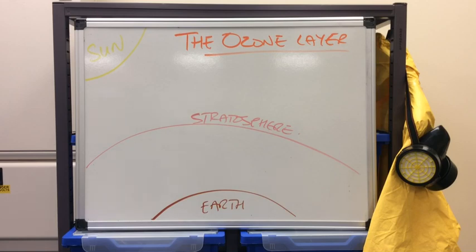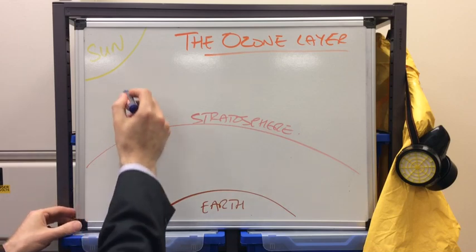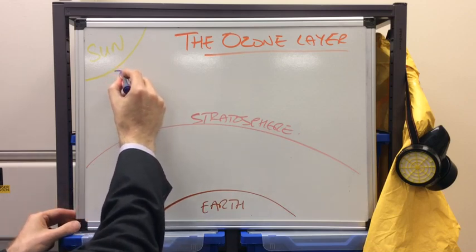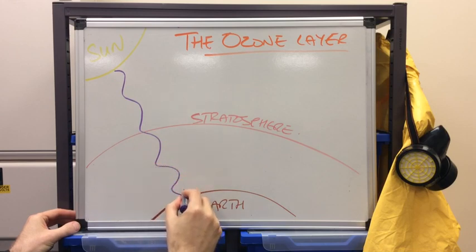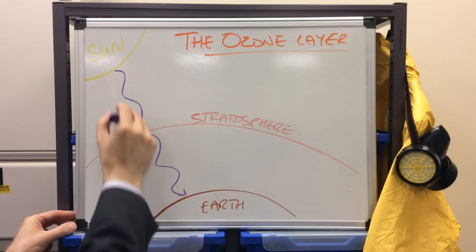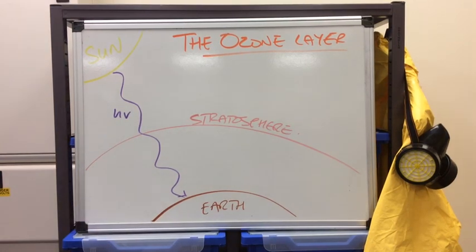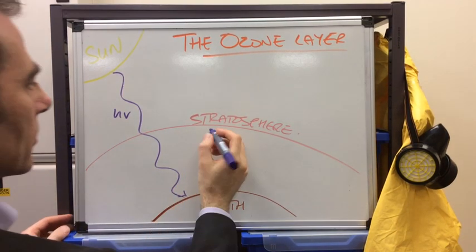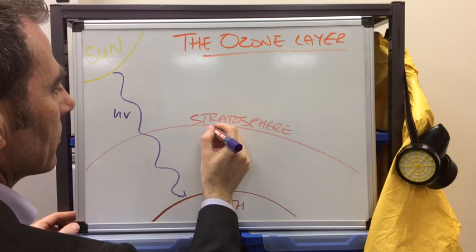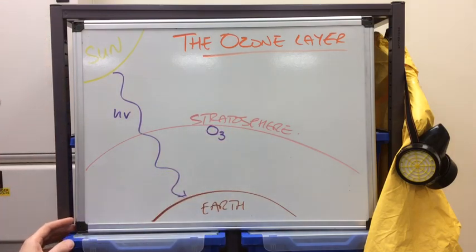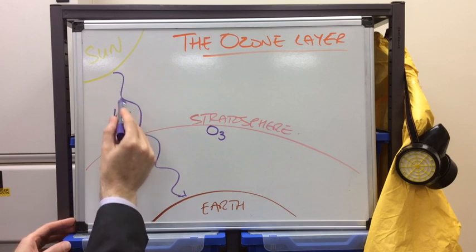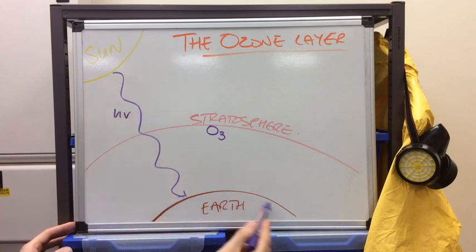We'll start with how it helps us. As we all know the Sun emits UV radiation. Now if it wasn't for ozone in the stratosphere, so the formula of ozone is O3, then all of the UV from the Sun would reach the Earth.